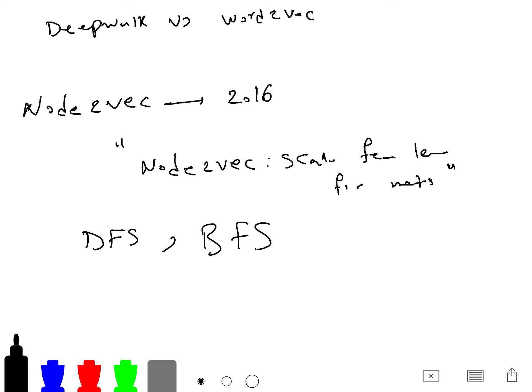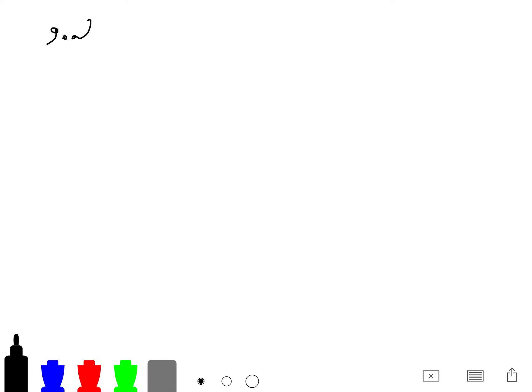So Node2Vec generalizes the DeepWalk. The goal is to maximize the likelihood of preserving network neighborhood and design a biased random walk procedure. So the contribution of Node2Vec is that they add flexibility in exploring neighborhoods.